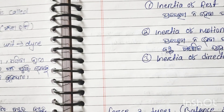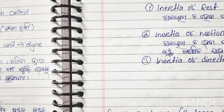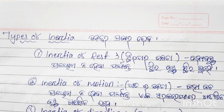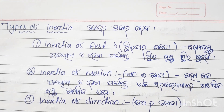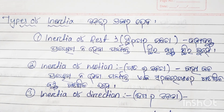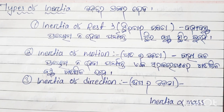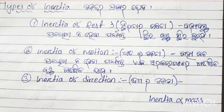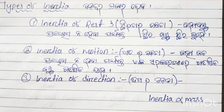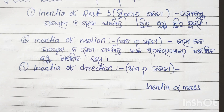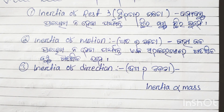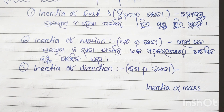The types of inertia relate to Newton's first law. First: inertia of rest. Second: inertia of motion. Third: inertia of direction. Inertia of rest means the tendency of a body at rest to remain at rest.